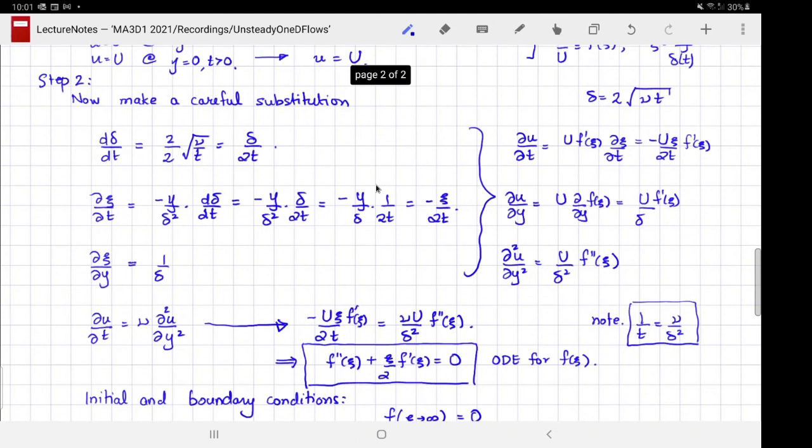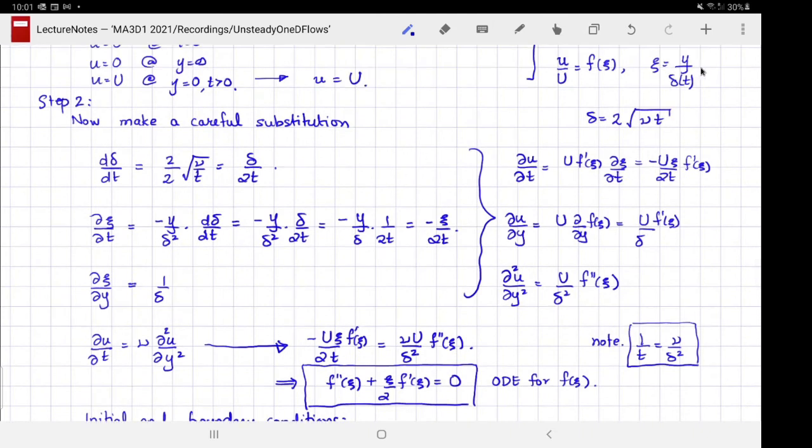I'm going to use this to find the time derivative of my similarity coordinate ∂ξ/∂t. When I differentiate, I get y/δ² with negative sign times dδ/dt, but I've calculated dδ/dt here, so I substitute that. One factor of δ gets cancelled, so I get y/δ, which is nothing but ξ, and I get a 2t in the denominator. This was the motivation—you'll see that differentiation with time appears very similar to just division by time.